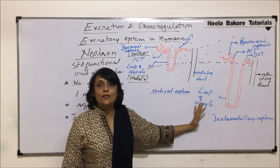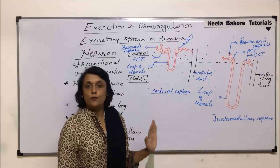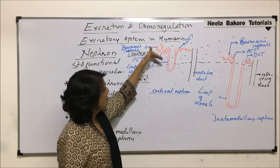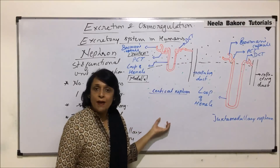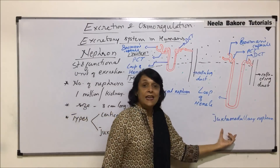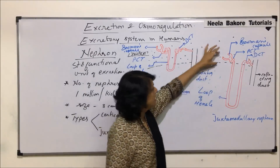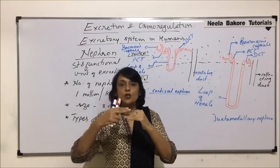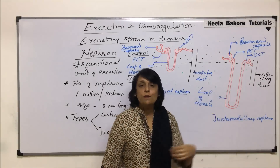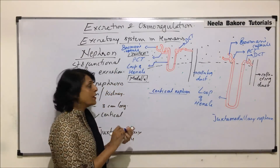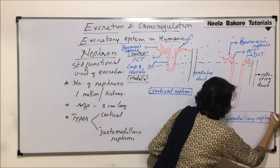Just by looking at these two diagrams, we can identify the differences. In cortical nephrons, most of the part is in the cortex, and very little part of the loop is in the medullary region. Whereas in juxtamedullary nephrons, the Bowman's capsule, PCT and DCT are close to the junction of cortex and medulla, and the loop of Henley is long and goes deep into the medullary region.